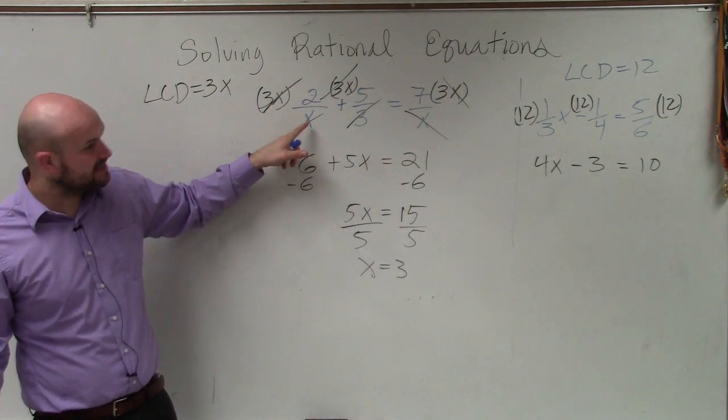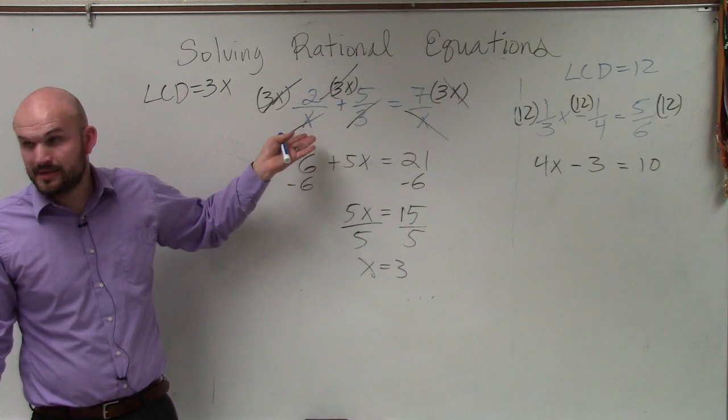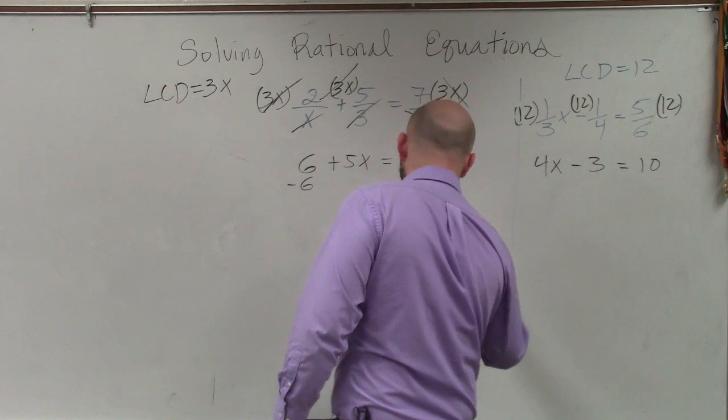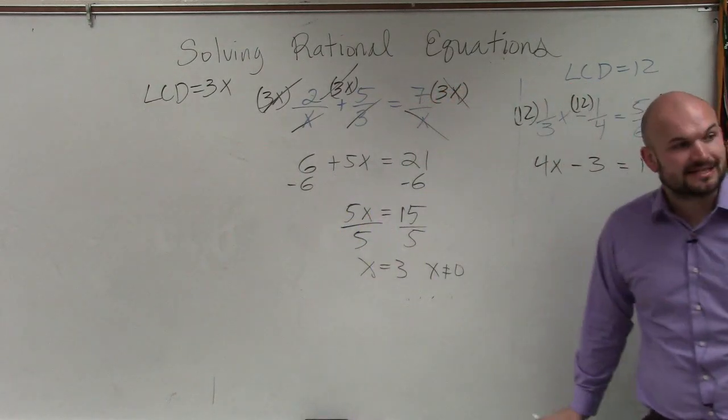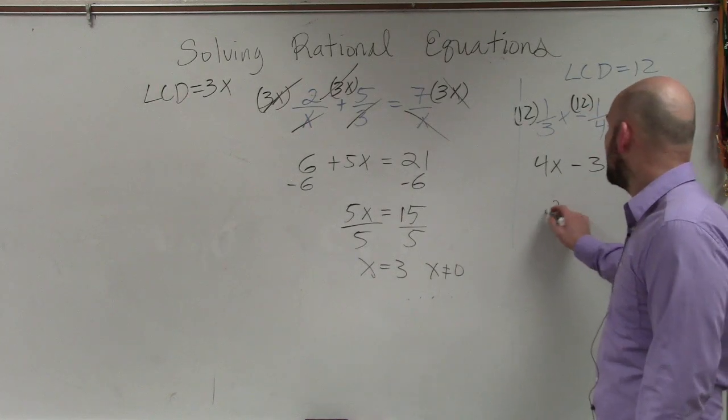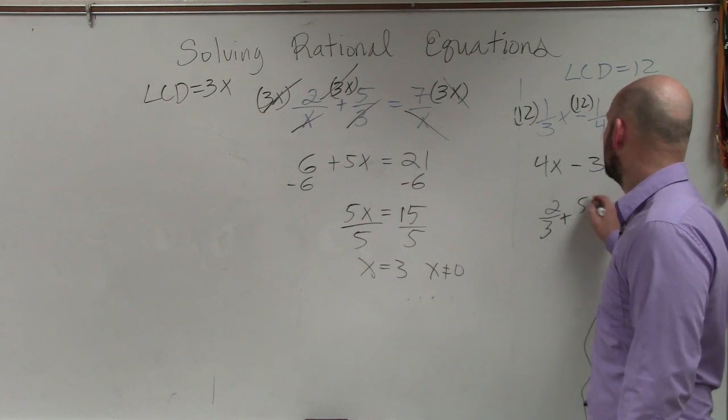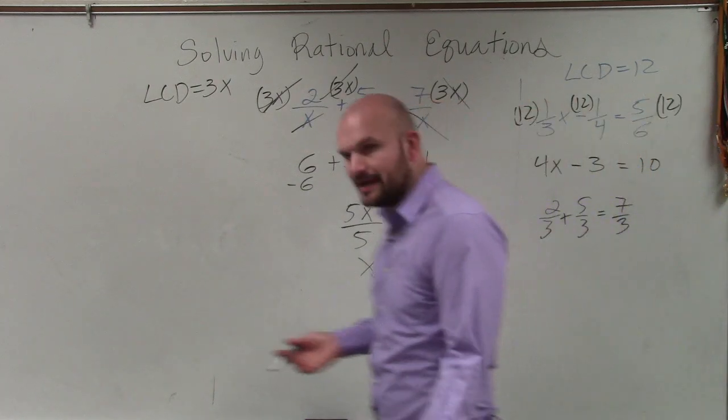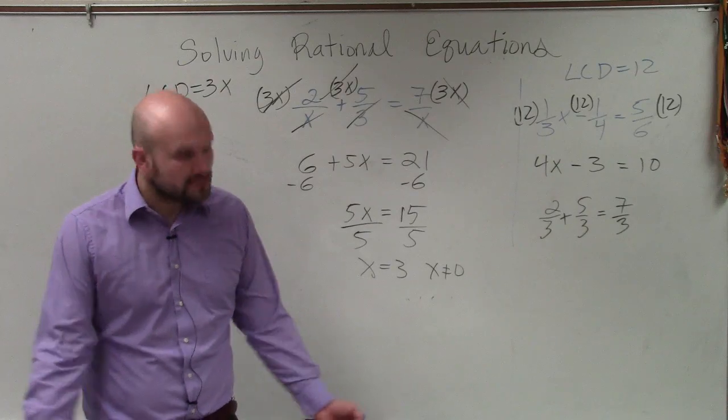Zero, right? You just can't have zero. Because you put zero in, then that would make that zero in the denominator. So we know x cannot equal zero. So you're going to want to write that in your answer. So x equals 3, and x cannot equal zero. And then the other thing is, let's just go ahead and double check our answer, make sure that that works. So I'd have 2/3 plus 5/3 equals 7/3. And obviously, does that make sense? Yeah, that works.